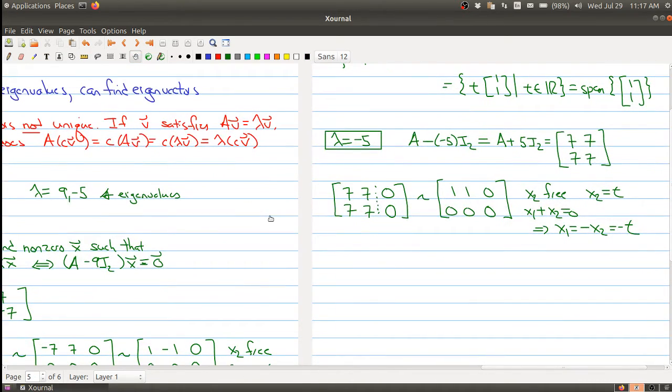And what we have now is all solutions have the form as follows: x1, x2 equals negative t, t, which gives me t times [-1, 1]. So this is an eigenvector if t is not equal to 0. So an eigenvector is [-1, 1]. This is an eigenvector associated to negative 5.